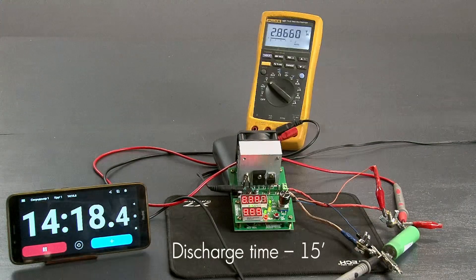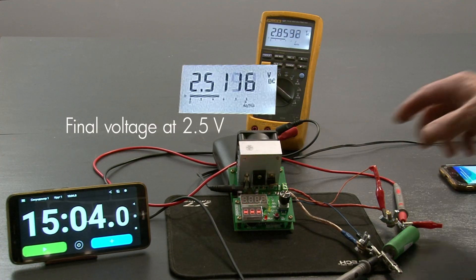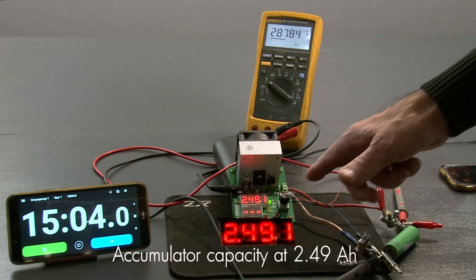Discharge time 15 minutes. Final voltage at 2.5. Accumulator capacity at 2.49Ah.